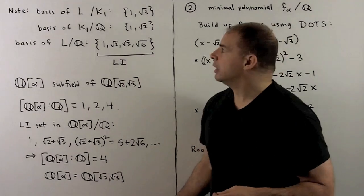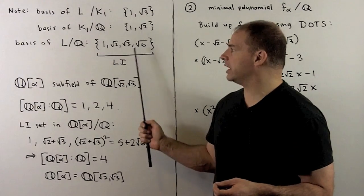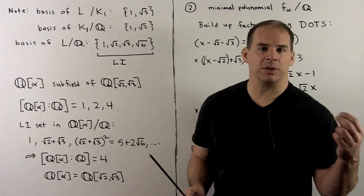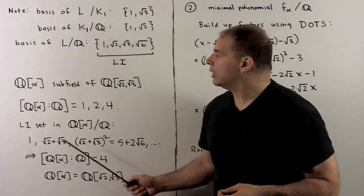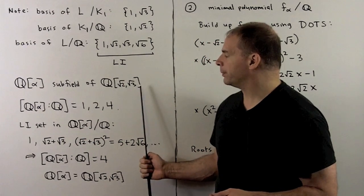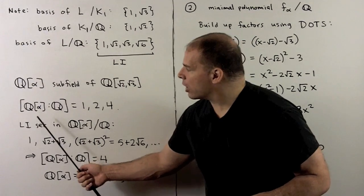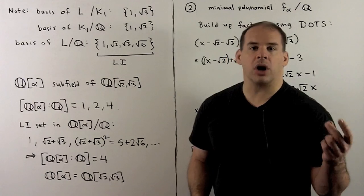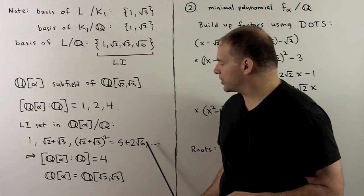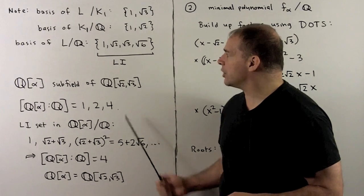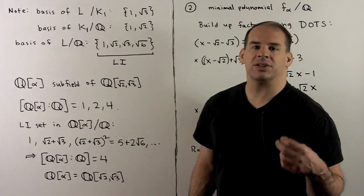To find a basis of L over ℚ, we find bases for each extension and take all products. So one basis of L over ℚ is {1, √2, √3, √6}. Because this is a basis over the rationals, this set is linearly independent over the rationals. Getting back to the original problem, we first note ℚ(α) is a subfield of ℚ(√2, √3), so the degree of ℚ(α) over ℚ is either 1, 2, or 4. Looking for a largest linearly independent set in ℚ(α): we have 1, α = √2 + √3, and α² = 5 + 2√6. These three vectors are linearly independent over the rationals, so the degree must equal 4. That means ℚ(α) equals ℚ(√2, √3) as subfields in the reals.